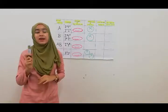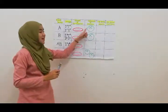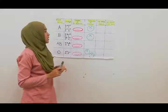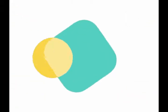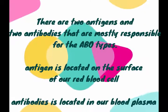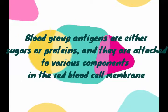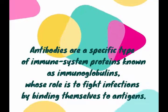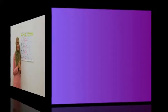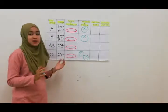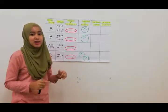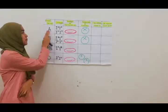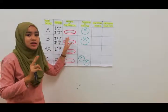These three alleles will determine the presence of antigens on our red blood cells and antibodies located in our blood plasma. Let's continue to the function of antigen and antibody in our blood. For blood group A, there will be antigen A in the blood group.